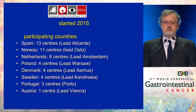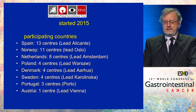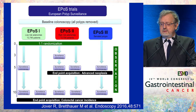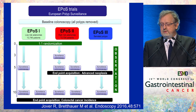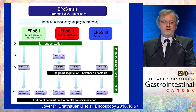Two major trials are now underway. The European Polyp Surveillance Trial (EPOS), started in 2015, is led by Spain and includes Norway, Netherlands, Poland, Denmark, Sweden, Portugal, Austria, and others. EPOS 1 randomizes low-risk adenoma patients to five-year plus ten-year surveillance versus ten-year only; EPOS 2 randomizes high-risk patients across three- five- and ten-year schedules; and EPOS 3 covers serrated polyps. Results are expected in 10–15 years, with a tendency toward prolonging surveillance intervals.